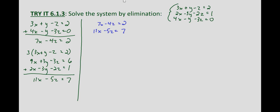Now we need to eliminate one of the remaining variables — I'm going to choose to eliminate z. The least common multiple of the coefficients 4 and 5 is 20. So I'll multiply the first equation by 5 and the second equation by 4. I could multiply by negative 4, but I'll apply the negative after the fact so I don't lose any negatives.